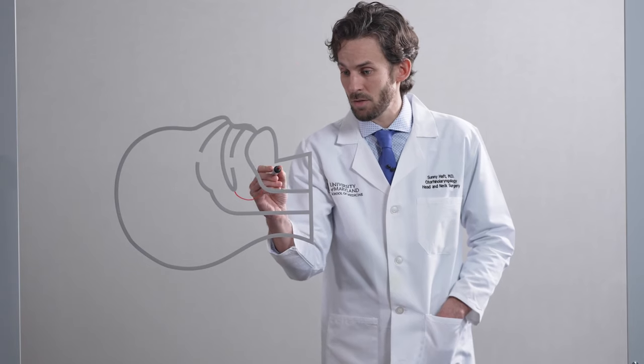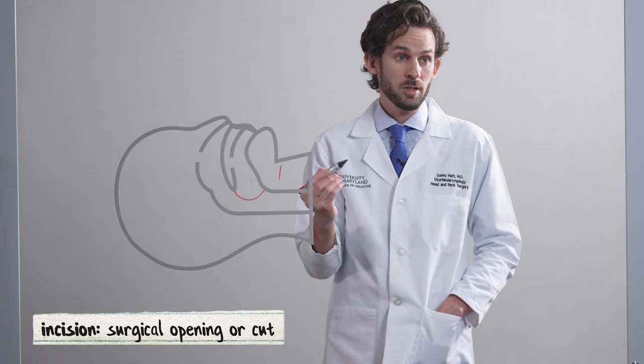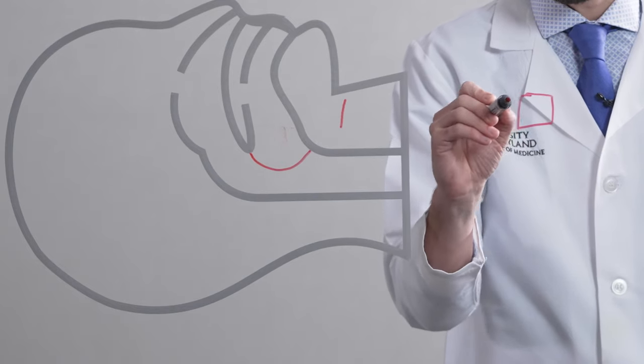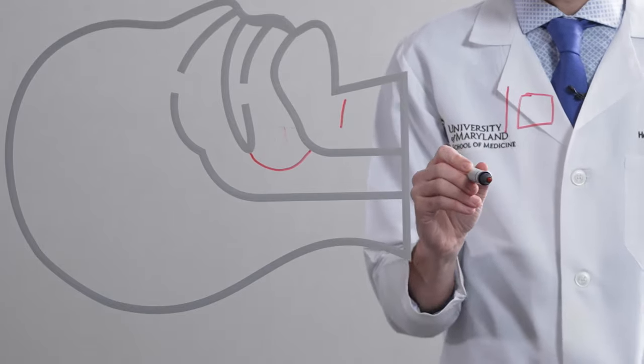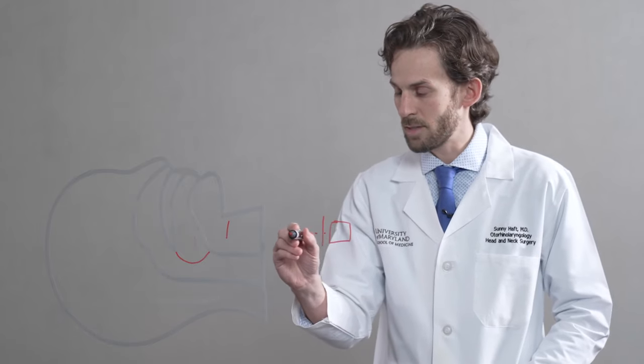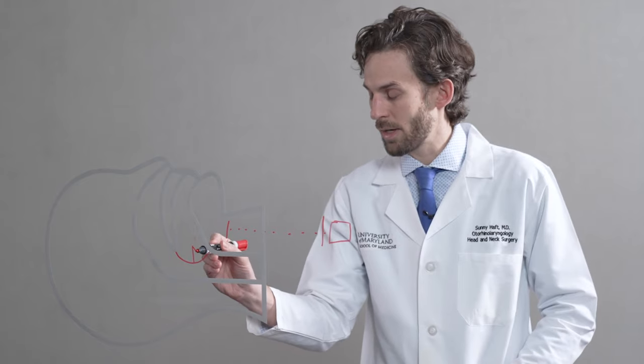It's a simple outpatient procedure. You have a small two-inch incision right here where a lead goes on the nerve that leads to your tongue, and then there's a small device that goes through a two-inch incision down here on your chest, and it senses every time you breathe in at nighttime and sends a signal to your tongue to bring it forward.